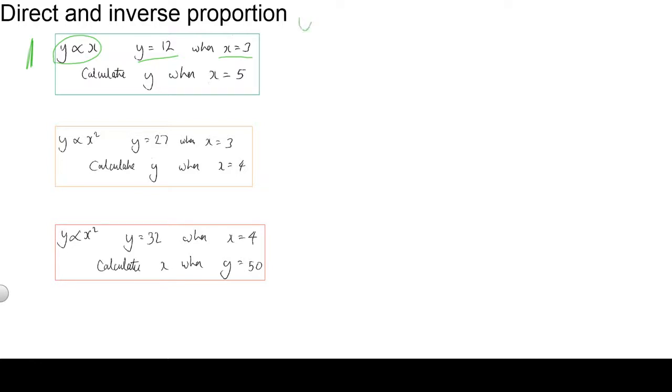So we write this down, y is equal to k, that's the constant of proportionality, times x. So when y is equal to 12, x is equal to 3. That x is equal to 3.